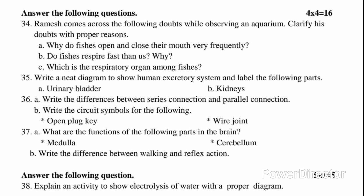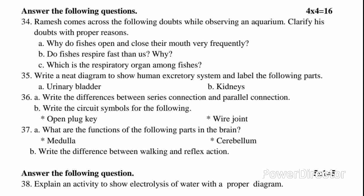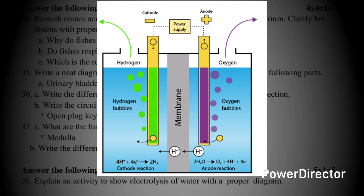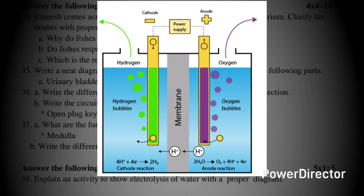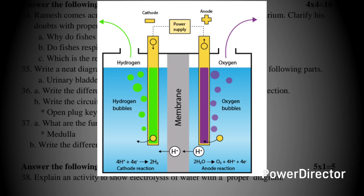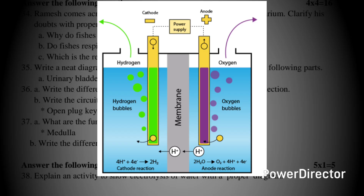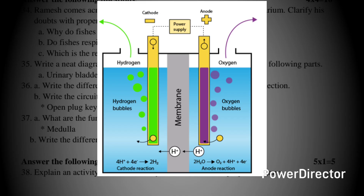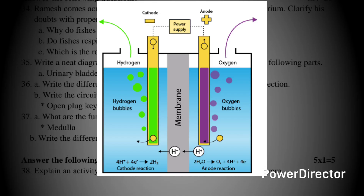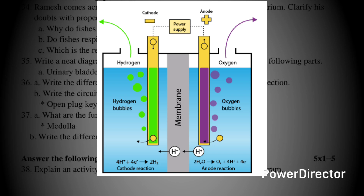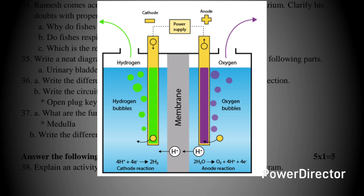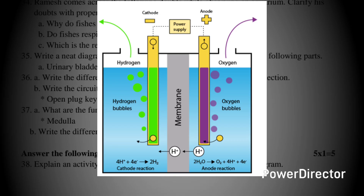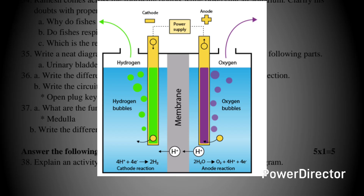Question 38: Explain an activity to show electrolysis of water with a proper diagram. Arrange the apparatus as shown in the figure. Connect the electrodes to a 6-volt battery. Fill the mug with water such that the electrodes are immersed. Add a few drops of dilute sulphuric acid. Take two test tubes filled with water and invert them over the two carbon electrodes. Switch on the current and leave for some time. Observation: bubbles are formed near the electrodes; gas will be collected in each test tube. The amount of gas collected in one test tube is double that in the other. Inference: on electrolysis, water produces hydrogen and oxygen.